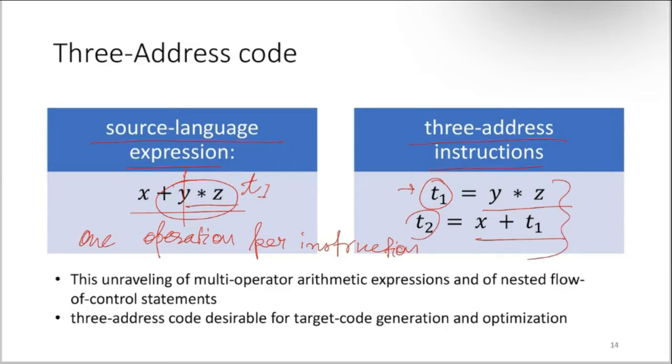This is called three-address code. One reason is that it uses three identifiers or three different addresses. Two of them for accessing the left operand and right operand, and the third one to store the result.